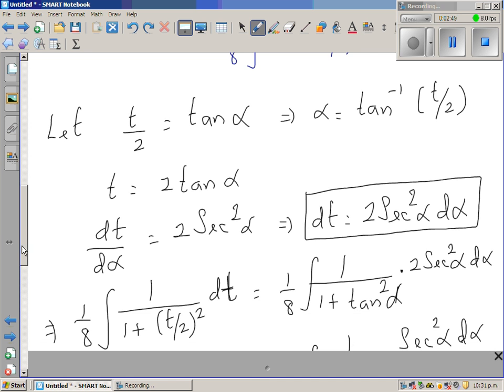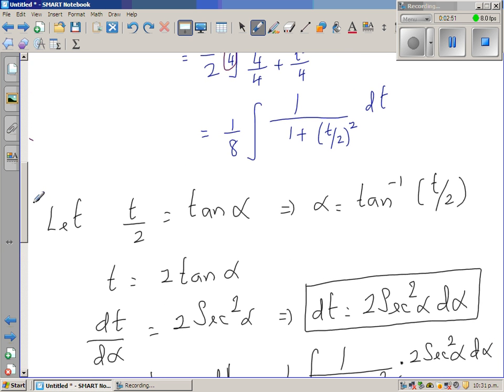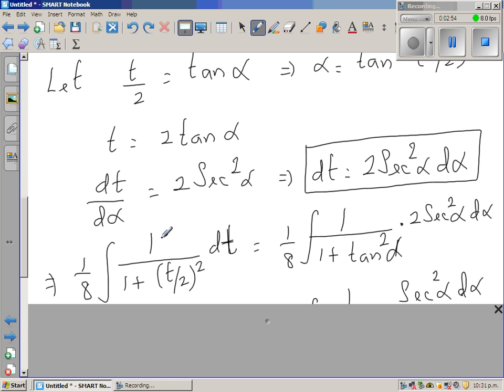I've rewritten that form: 1/8 times 1 over 1 plus tan squared alpha times 2 sec squared alpha d alpha.